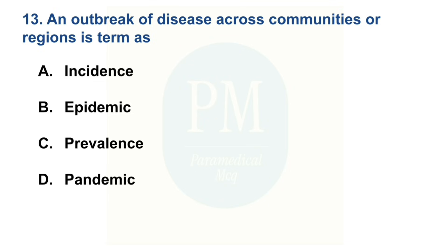An outbreak of disease across communities or a region is termed as: Option A: Incidence. Option B: Epidemic. Option C: Prevalence. Option D: Pandemic. The correct option is Option B — Epidemic.